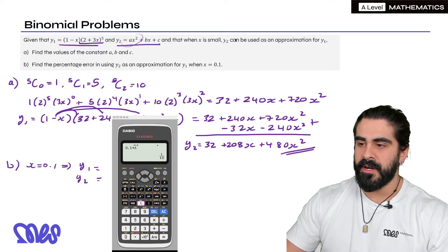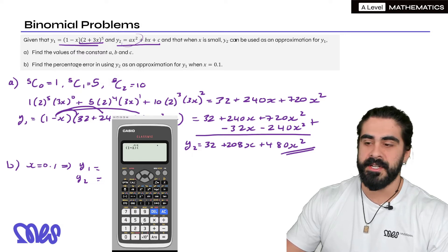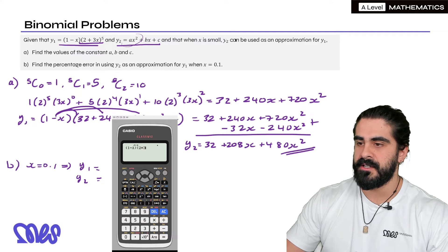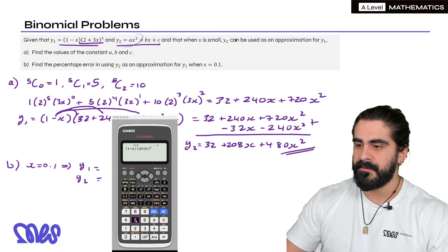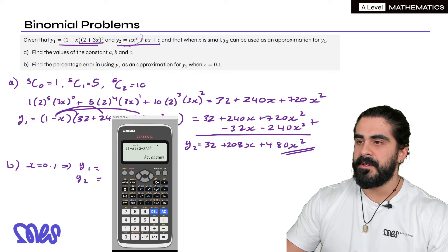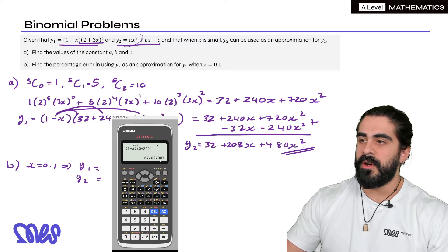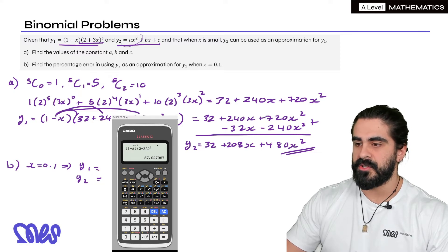So when we sub into y1 wherever I see x I'm just going to replace it with the letter a. So then I just sub in 0.1 directly. So we get (1 - a)(2 + 3a)^5. And there's our number. So that's when we sub it into y1.